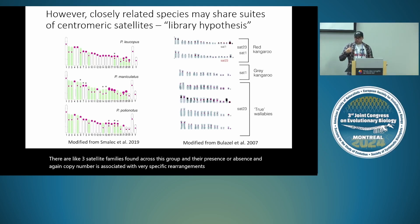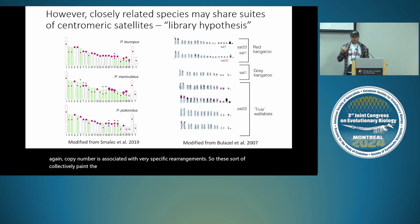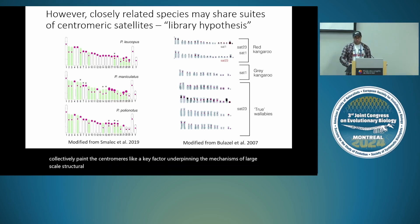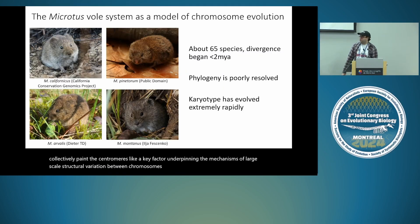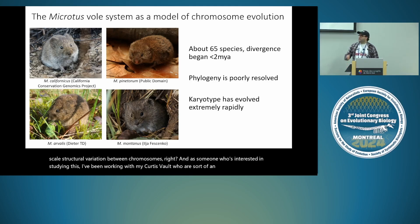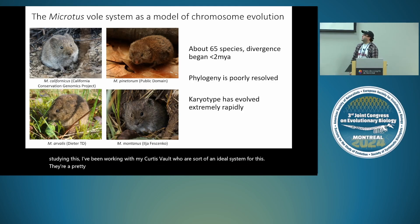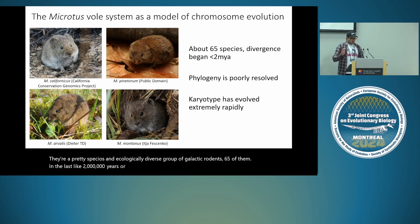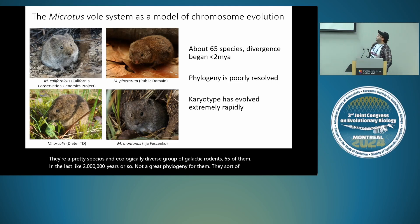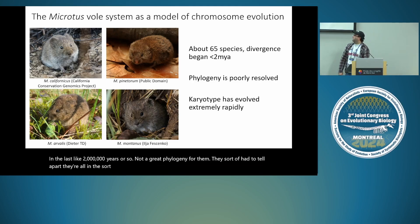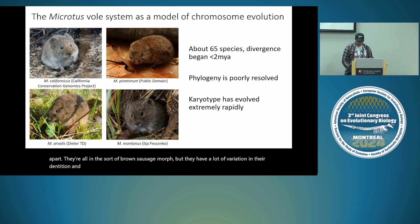These collectively paint the centromere as a key factor underpinning mechanisms of large-scale structural variation between chromosomes. I've been working with Microtus voles, which are an ideal system: a speciose and ecologically diverse group of Holarctic rodents, 65 species in the last two million years or so. They are hard to tell apart morphologically — all in the brown sausage morph — but they have a lot of variation in dentition and most importantly in their karyotypes.